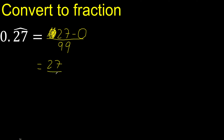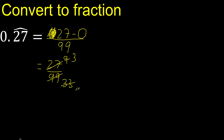Can be simplified because it can be divided by the same number — divided by 3. 27 divided by 3 is 9, divided by 3. Can be divided by 3; divided by 3 is 3; divided by 3 is 11.